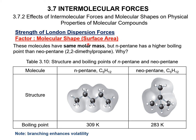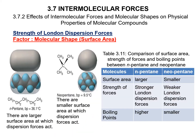The second factor is molecular shape or surface area. These two molecules — n-pentane and neopentane — have the same molar mass and the same molecular formula, C5H12, but they have different boiling points. N-pentane has a larger boiling point because it has a larger surface area at which dispersion forces act, while neopentane has a smaller surface area.